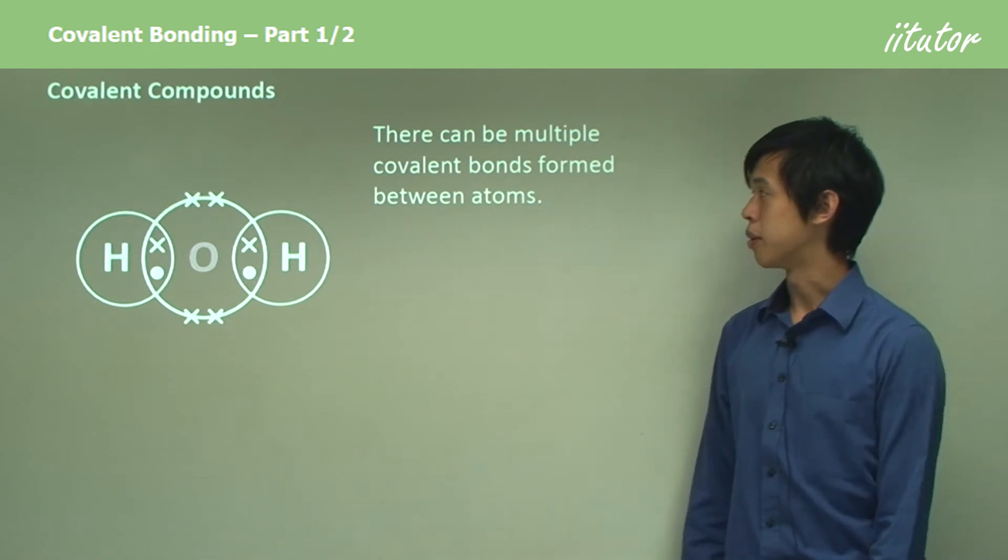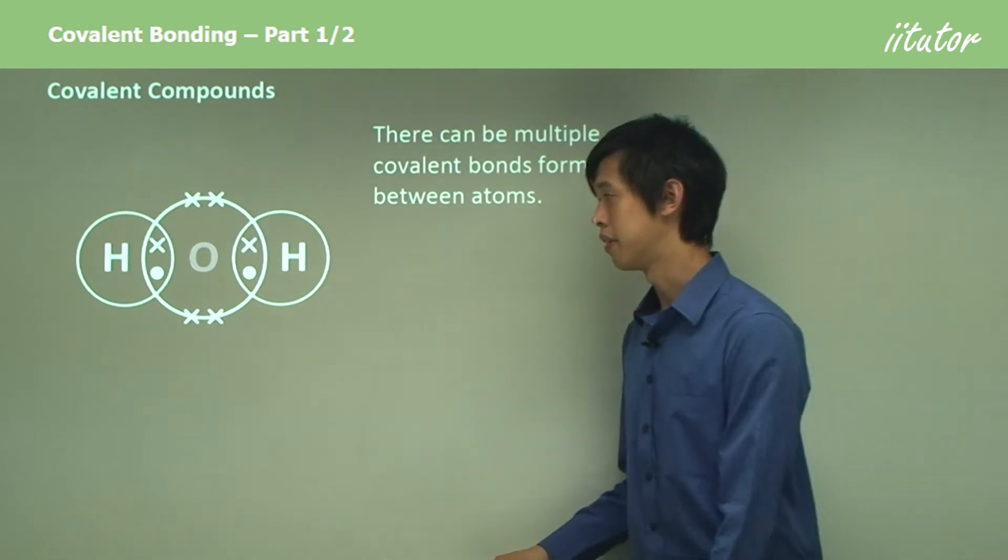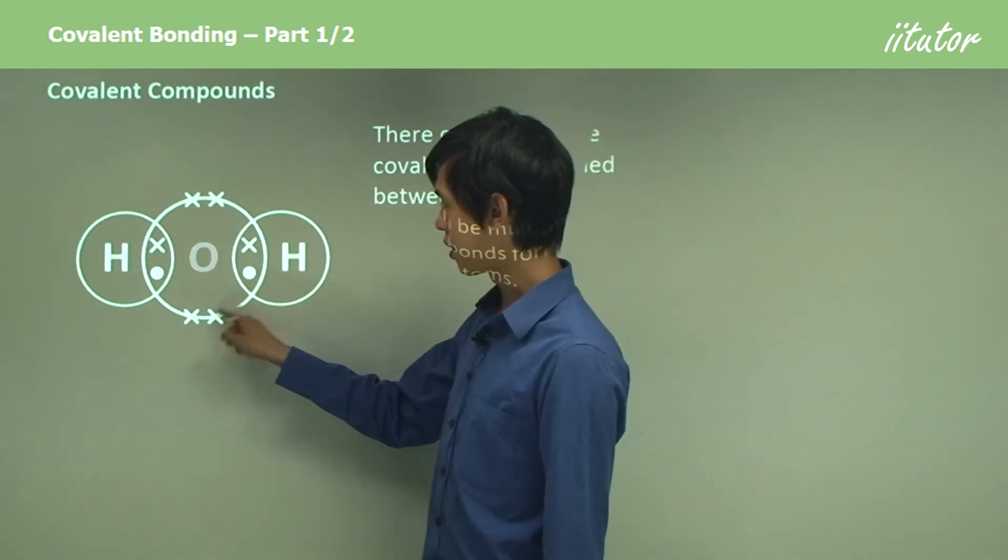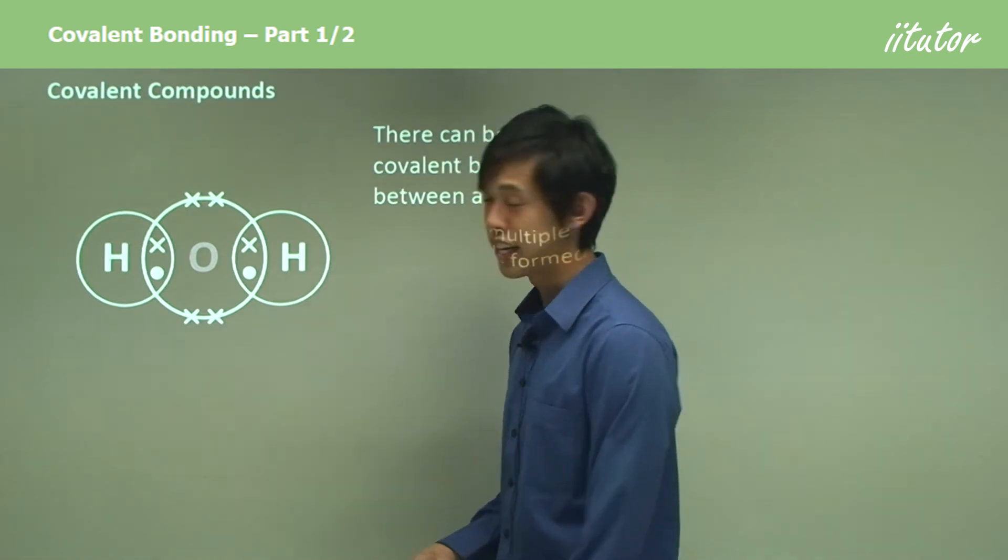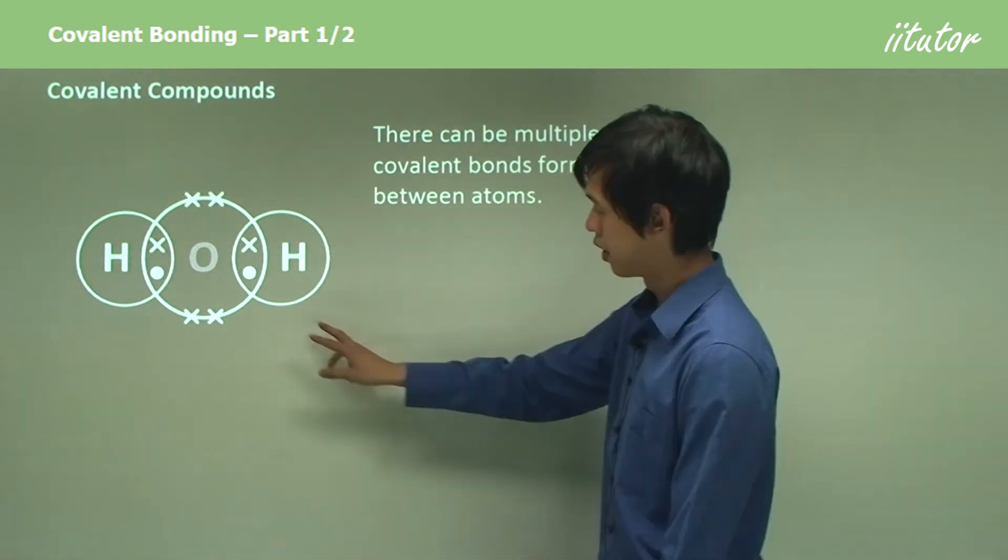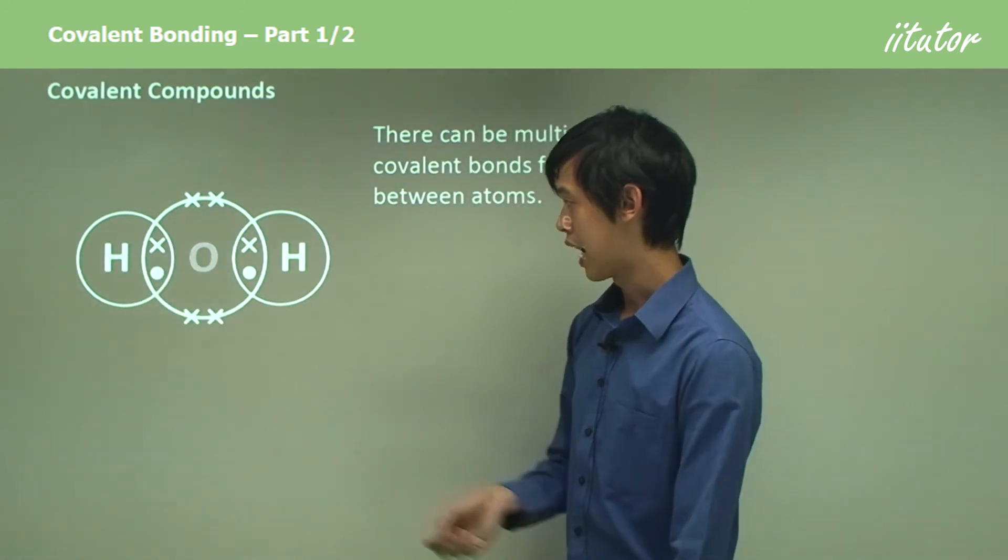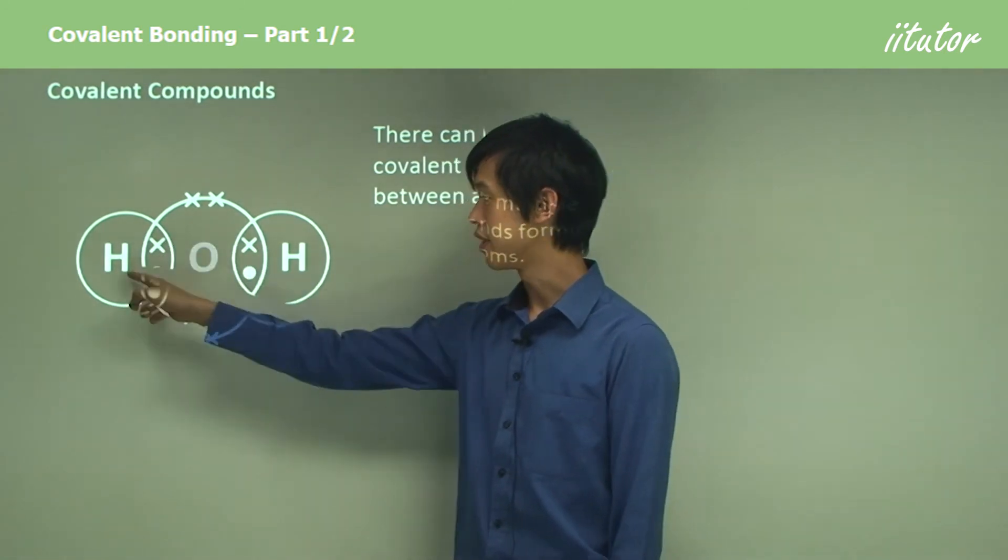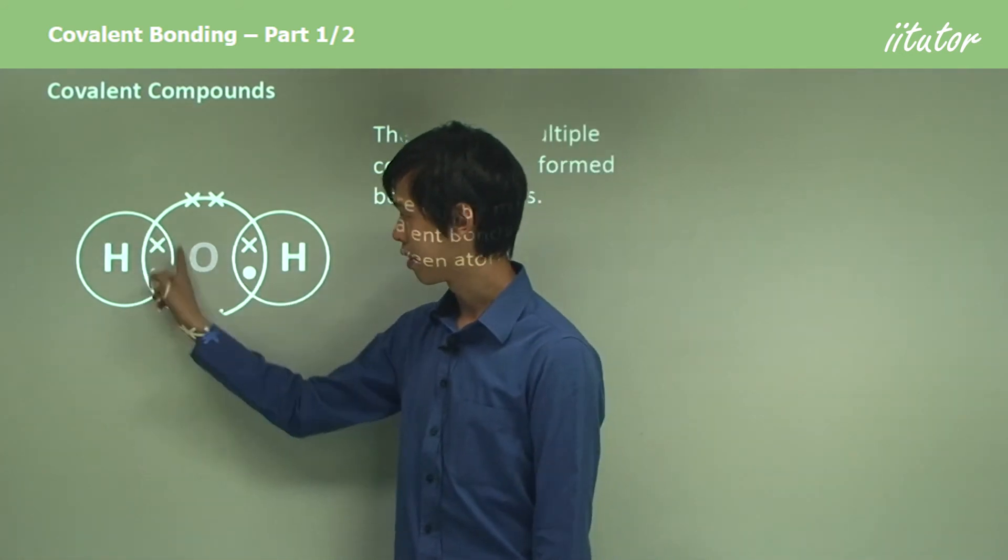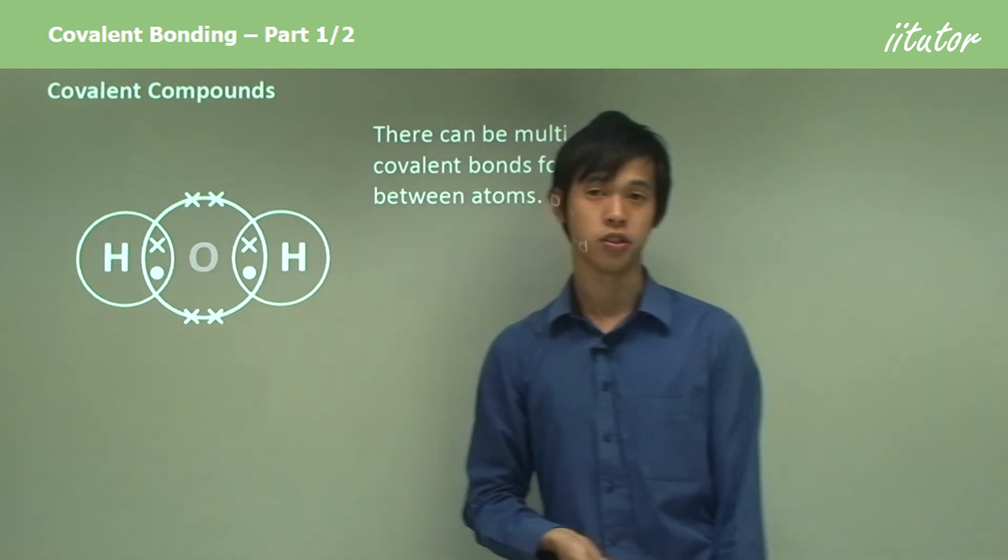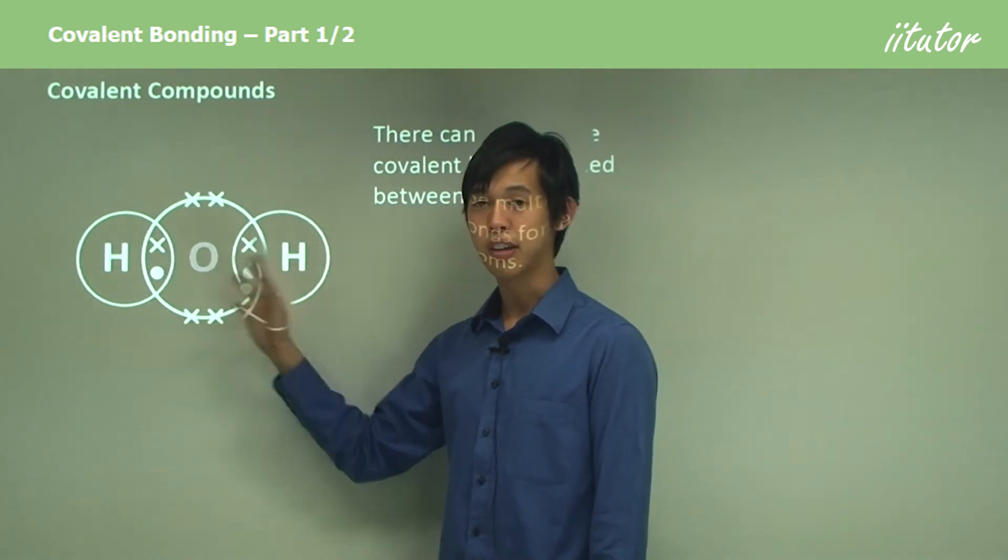Covalent compounds. There can be multiple covalent bonds between atoms. Let's take water. Water is a very good example. You can see that the oxygen with the x's has six electrons. Now it needs two more electrons to become stable. What happens is it grabs a hydrogen atom and shares one of its free electrons with the hydrogen atom. Now the hydrogen atom thinks that it has two electrons, so it's stable. And on this side the same thing happens. So both hydrogens think they're stable.